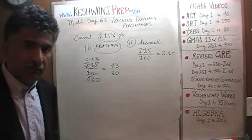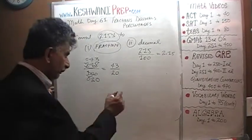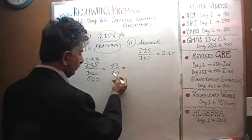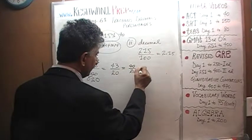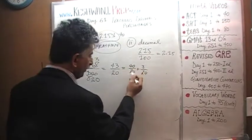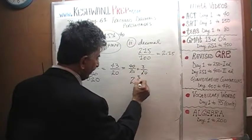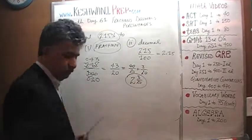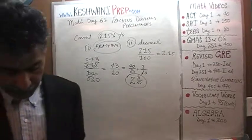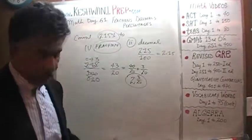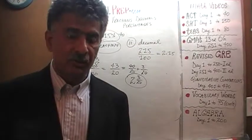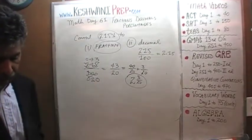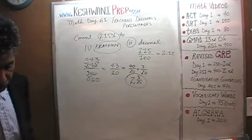The answer choices that they present to you has to match what you come up with here. They're going to go one more step, convert this into a mixed fraction. 43 over 20 is same as 40 over 20 plus 3 over 20. 40 over 20 is 2 so the final answer is 2 and 3/20. This is exactly what you're going to see as one of the answer choices. Let's go on then, let's do the next one.